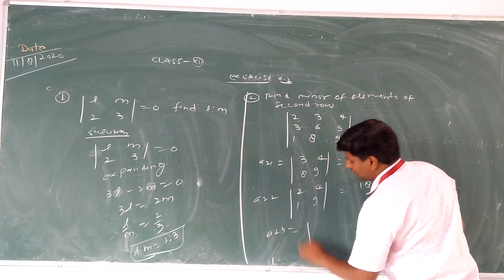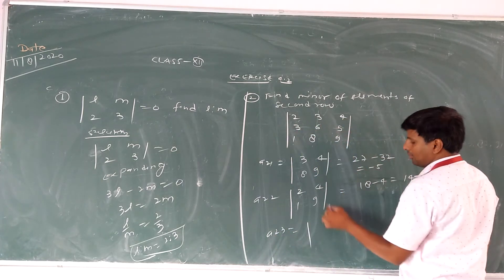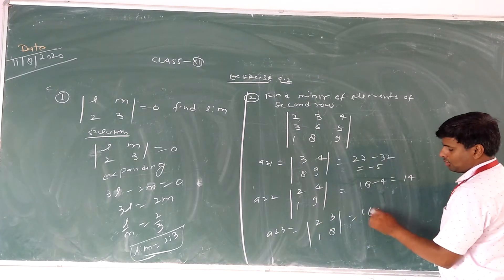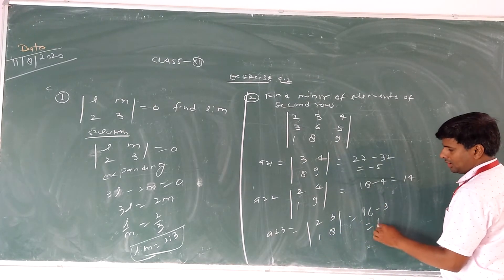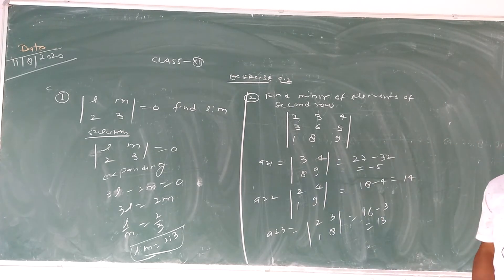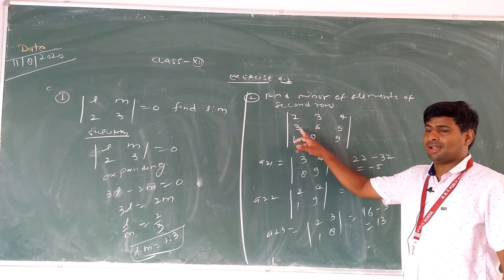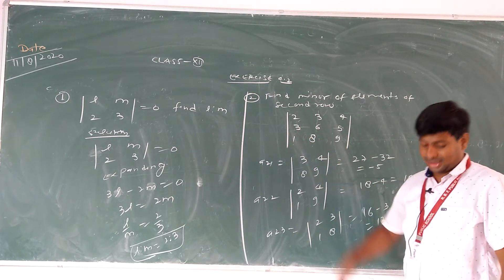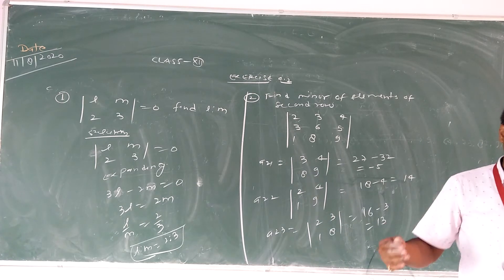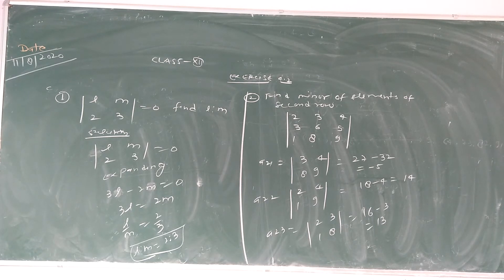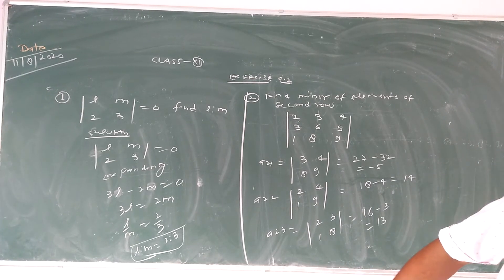Then for A23, this is the minor. Now when you use the sign system, the sign case is minus 1 to the power i plus j. So cofactor will be minor multiplied by the appropriate sign. This will be the cofactor. Is it clear? So students of class 12, in this way we completed two questions.